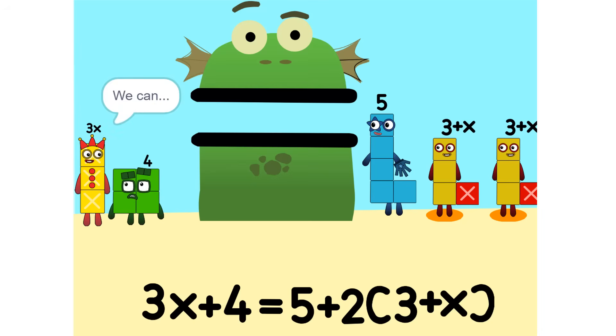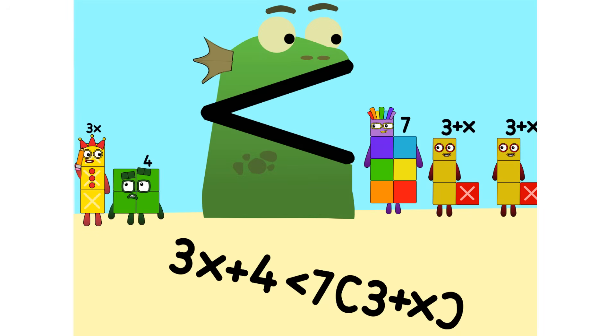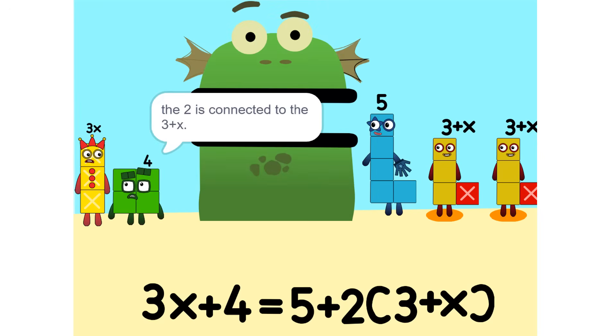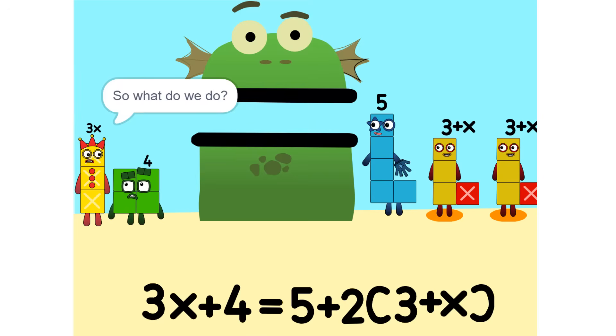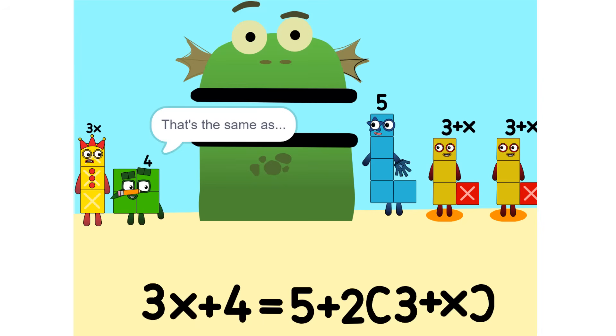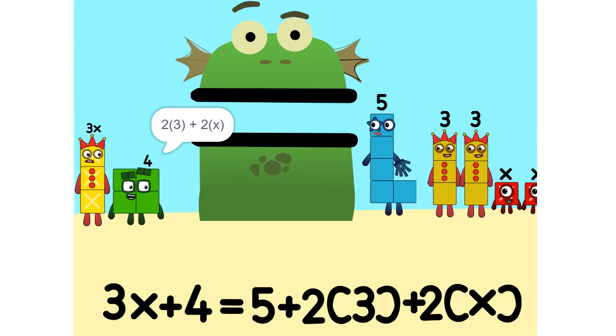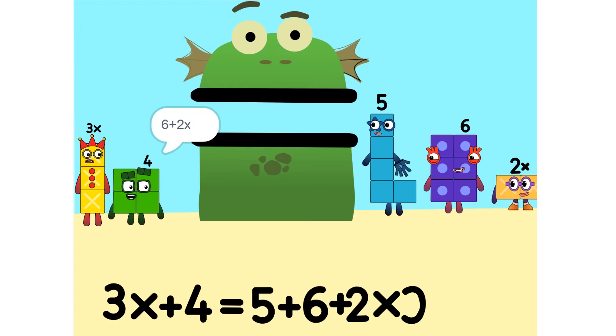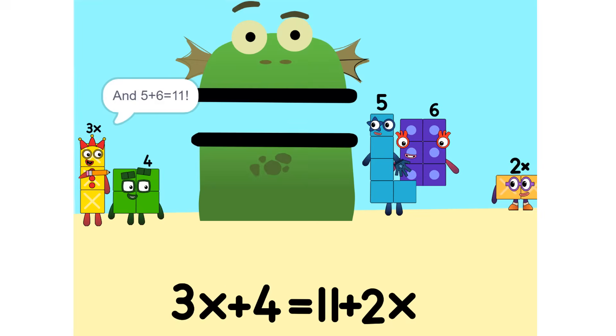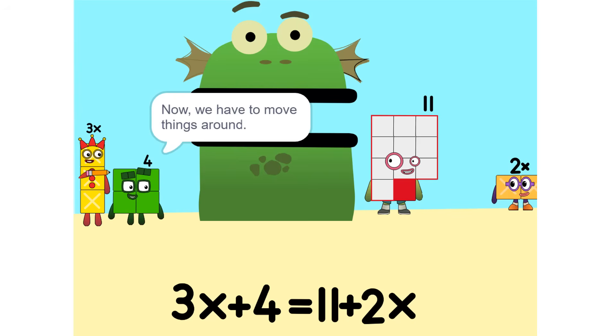I see something. We can add these. Why did that happen? Because the 2 is connected to the 3 plus X. So it's like adding apples and oranges. You can't. So what do we do? See the 2 times 3 plus X? That's the same as 2 times 3 plus 2 times X, which is 6 plus 2X. And 5 plus 6 is 11. Yeah.